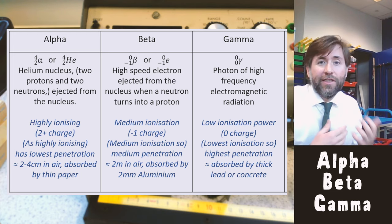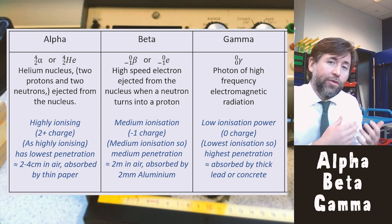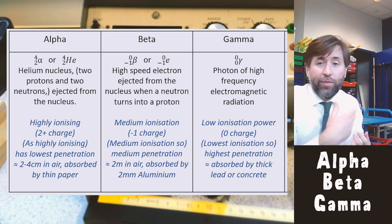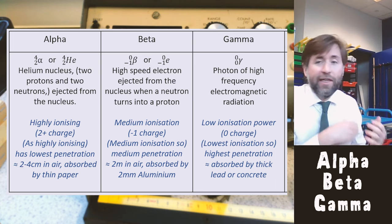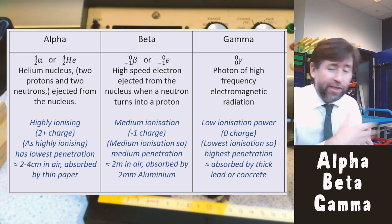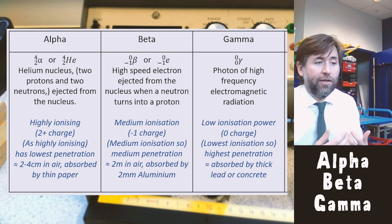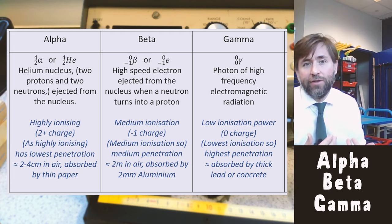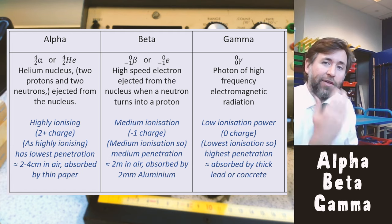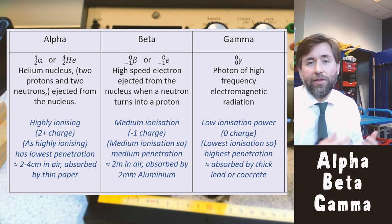The beta is less ionizing, it's a single electron. And so it won't do as much ionization so it will penetrate further. And then lastly the gamma is not very ionizing at all, so it will penetrate very, very far. It is still ionizing but it ionizes in a different way to the other two. Very concentrated rays of gamma can still do enough ionization to kill cells or maybe even give you cancer.